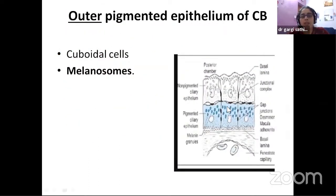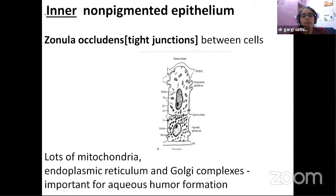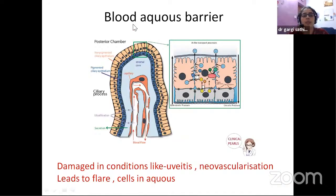The outer pigmented layer — outer is towards the stroma and the sclera — you can see it is densely pigmented cuboidal cells. The inner non-pigmented is very important, more columnar, with lots of organelles because it is very busy producing aqueous humor. There are tight junctions — zonula occludens — between these cells, showing that nature is trying to prevent blood components from reaching the posterior chamber. That constitutes what is very importantly called the blood-aqueous barrier. Blood in the capillary has to pass through the endothelium, through stroma, through the two pigment epitheliums and the tight junctions to reach the aqueous humor. In conditions like uveitis and neovascularization, this barrier is broken and we get turbid aqueous — we can see flare and cells in the aqueous humor.